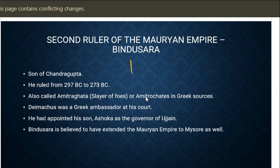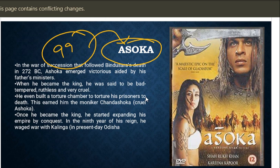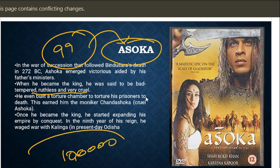The son of Bindusara is Ashoka, whom we need to talk about. There is a myth that Ashoka killed 99 brothers and ascended the throne. He was said to be of bad temper and ruthless. He attacked Kalinga and witnessed the death of around 1 million people. After seeing the sorrows and bloodshed, he converted to Buddhism.